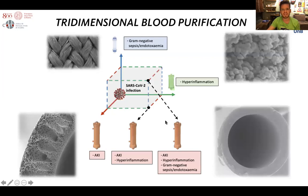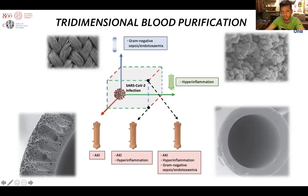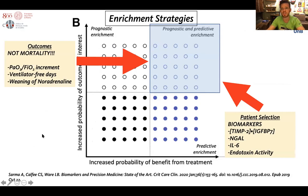We have created this three-dimensional model of extracorporeal blood purification in which on the x-axis we have the domain of hyperinflammation. This is a scan electron microscopy of a bead — the surface of a bead that absorbs cytokines. We have the y-axis representing endotoxins, and here is the scan electron microscopy of the fibers of a cartridge that removes endotoxins. Here is the cross-section of a hollow fiber from a dialyzer, and this from another dialyzer which has properties to absorb endotoxins and also cytokines.